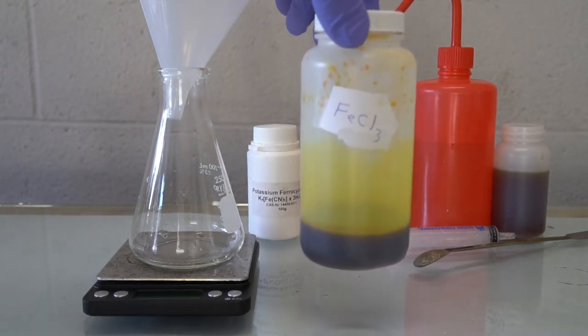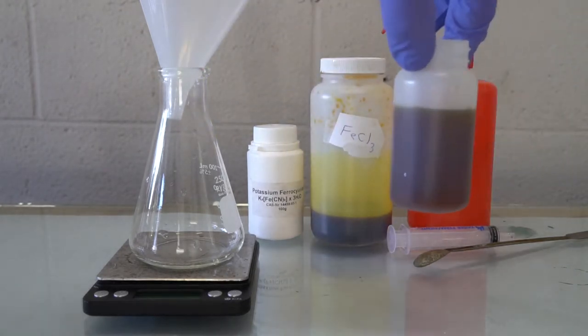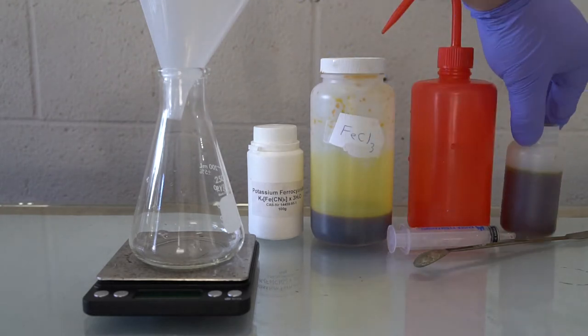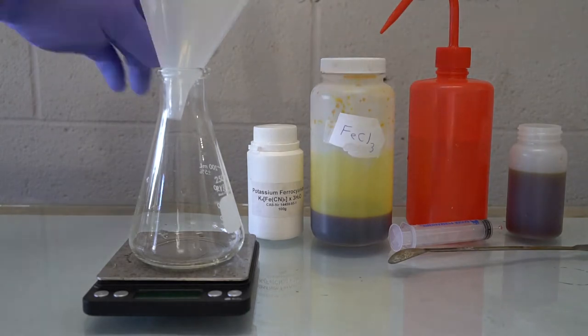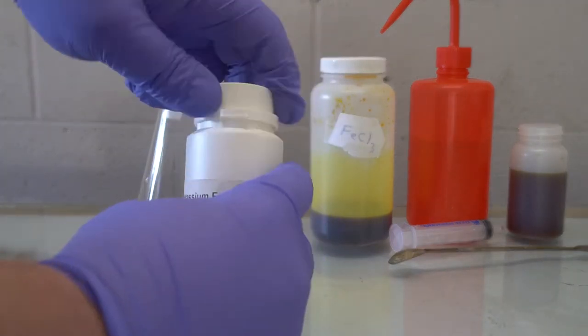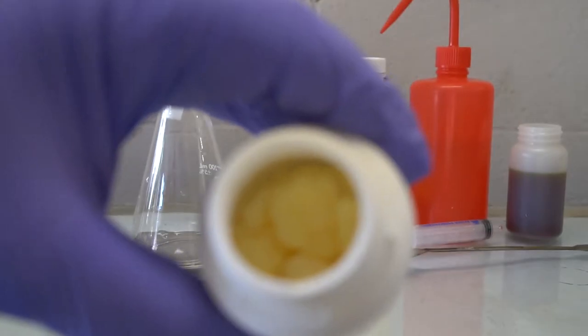We measured out five grams of potassium ferrocyanide into a 250 milliliter flask and added 175 milliliters of distilled water. We gave it a good stirring with our trusty iron spoon.